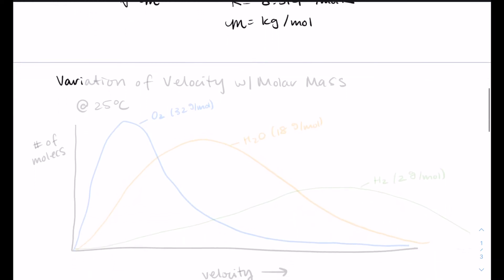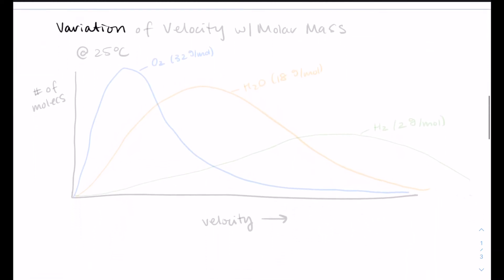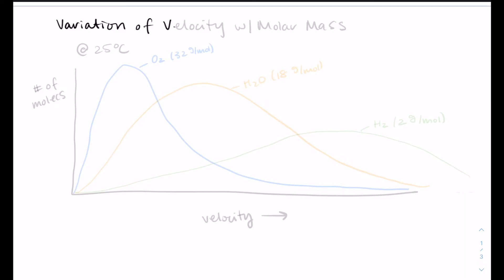I'm going to make a graph. It is the variation of velocity with molar mass. So we're going to pick one temperature, so the average kinetic energy has to be the same for all samples. And then we're going to plot what their velocities would look like. So my y-axis is number of molecules, and my x-axis is velocity.